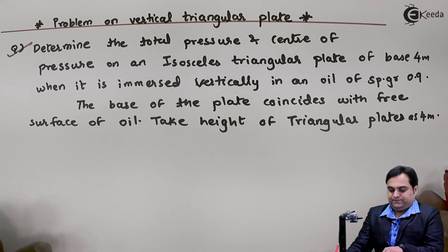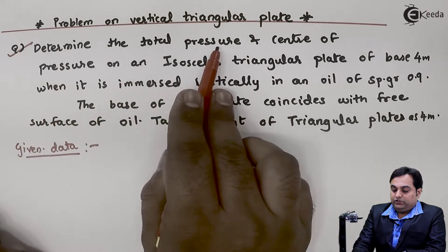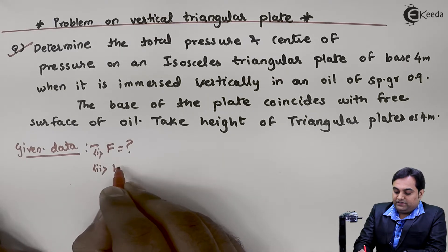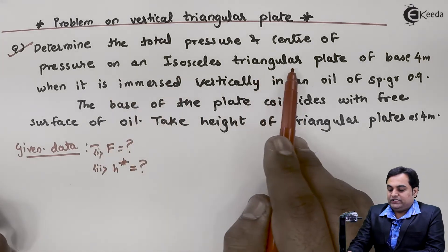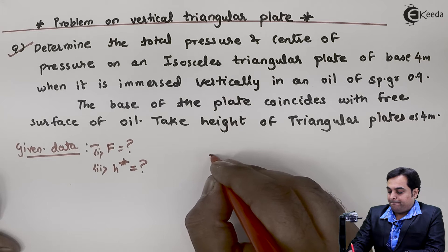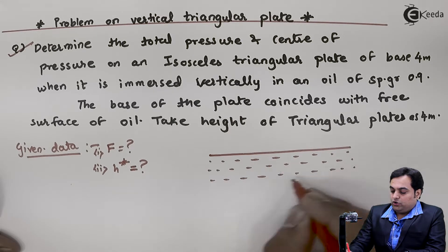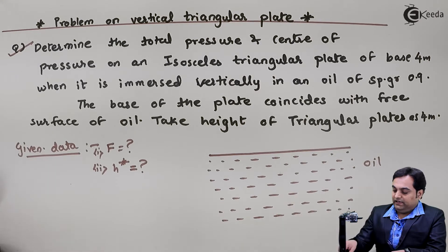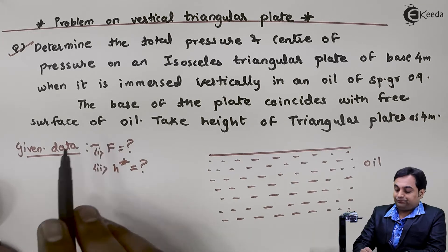I will write the given data. We need to determine total pressure F, which is the hydrostatic force, and center of pressure H-star, which is the location of the hydrostatic force. The plate is an isosceles triangular plate of base 4 meters, immersed vertically in oil. We can visualize a tank filled with oil, with a triangular plate inside it. The condition is that the base of the plate coincides with the free surface of oil.